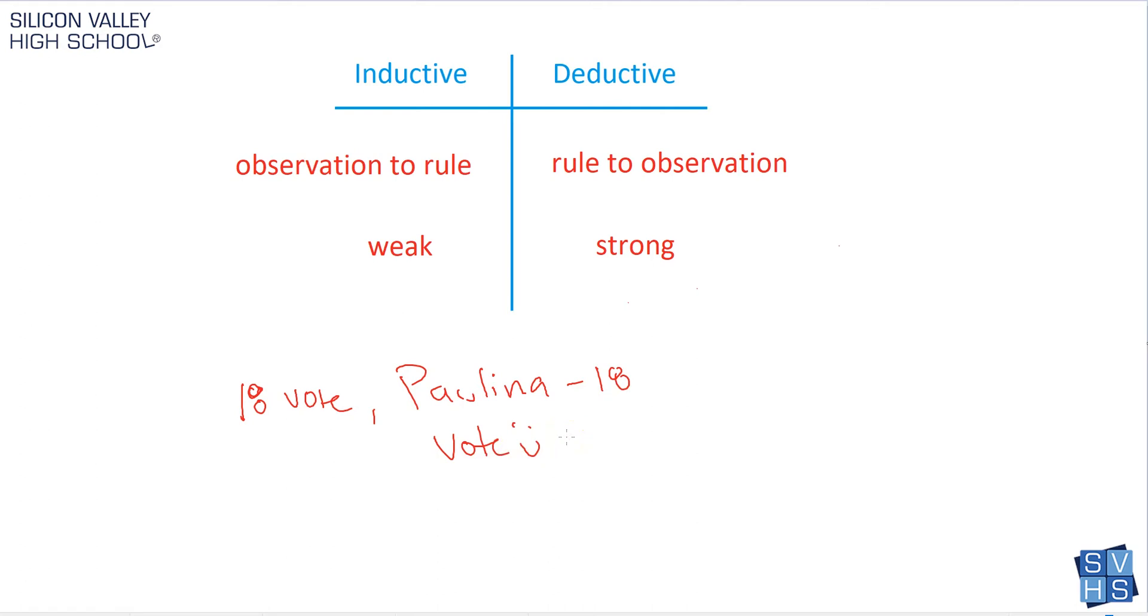What type of reasoning is this? Is this inductive or deductive? Because this first one is essentially a concrete known fact, we know that in America, if you're 18, you can vote. So Paulina is 18, she can vote. This is deductive reasoning.